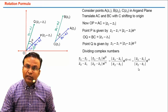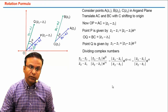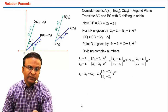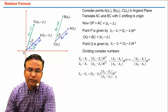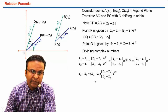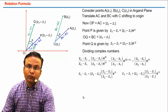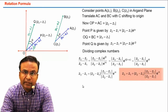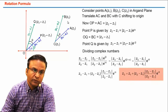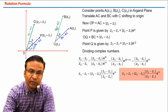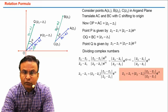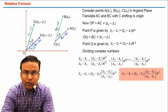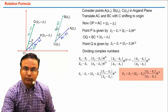So we have the formula: z3 − z1 = (z2 − z1) · (|z3 − z1| / |z2 − z1|) · e^(iθ), which is represented by point B. This formula is called the rotation formula. Now what is the geometrical interpretation of this formula?